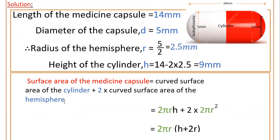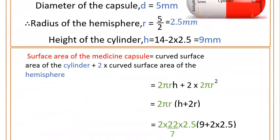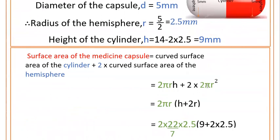So 2 times curved surface area of the hemisphere. Curved surface area of the cylinder is 2πrh plus 2 times 2πr². Curved surface area of the hemisphere is 2πr². Here 2πr is common, so 2πr times (h + 2r).